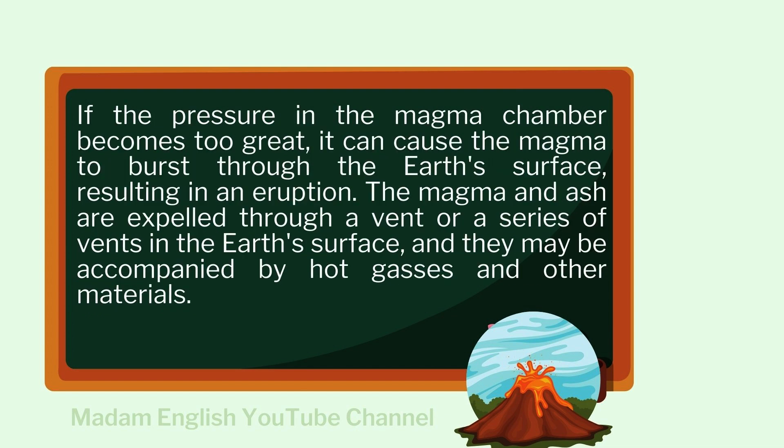If the pressure in the magma chamber becomes too great, it can cause the magma to burst through the earth's surface, resulting in an eruption. The magma and ash are expelled through a vent or a series of vents in the earth's surface, and they may be accompanied by hot gases and other materials.